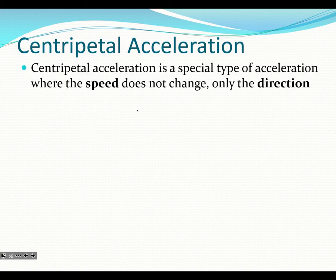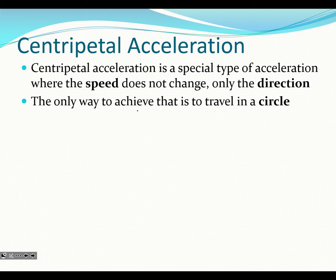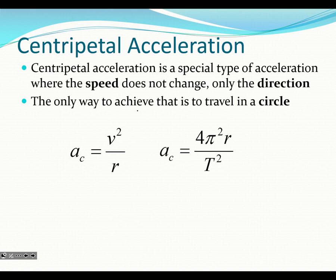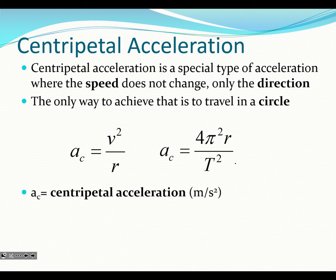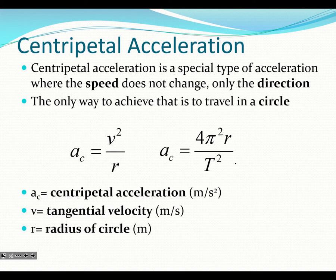Centripetal acceleration is a special type of acceleration where your speed does not change, only your direction. The only way to do this is to move in a circle or some portion of a circle. We have two formulas for centripetal acceleration: AC equals V squared over R, and AC equals 4 pi squared R all over T squared. Where AC is centripetal acceleration, V is tangential velocity, R is radius, T is period.